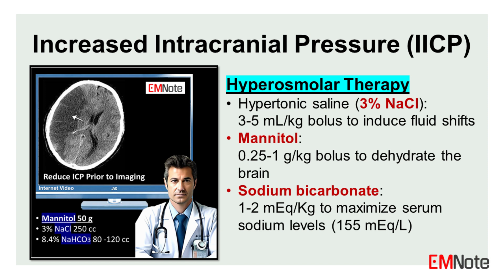Mannitol, a potent osmotic diuretic, is given at a dose of 0.25 to 1 gram per kilogram as a bolus to reduce ICP by dehydrating the brain. Smaller doses of 0.25 to 0.5 gram per kilogram have been shown to be as effective as larger doses in reducing ICP acutely.